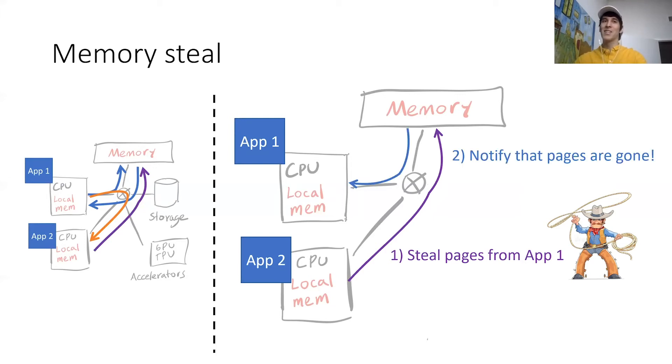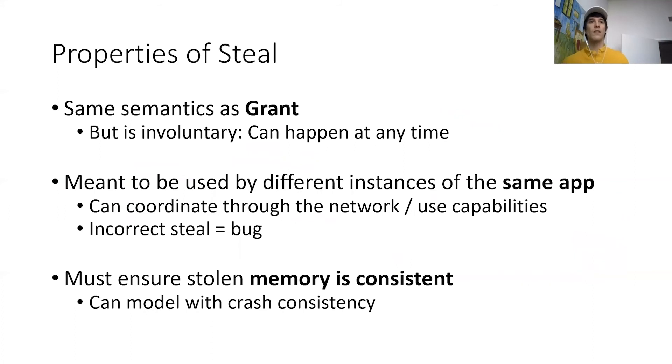So this is a little bit tricky and weird because essentially app1 can be doing its thing and then suddenly half of its memory is gone. So this is going to introduce some challenges on how do we implement applications that are okay with this type of operation. One of the things that we identify is that it's very important that the memory that is stolen is internally consistent. Otherwise, the process that's stealing that memory—for example, app2—might crash. In the paper we actually discuss how this turns out to be very similar to ensuring crash consistency guarantees in non-volatile memory systems, so we can use many of the techniques such as using transactions.